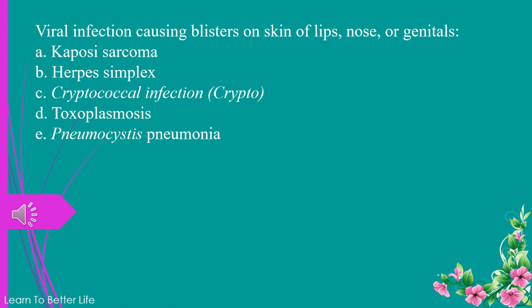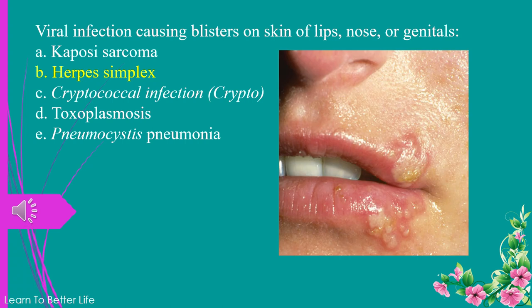Viral infection causing blisters on skin of lips, nose, or genitals. a. Kaposi's sarcoma. b. herpes simplex. c. cryptococcal infection. d. toxoplasmosis. e. pneumocystis pneumonia. The answer is b. herpes simplex.